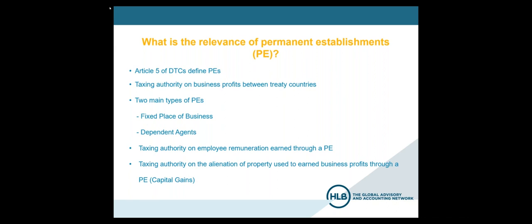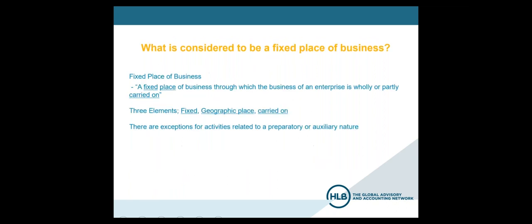The next question is: what is considered to be a fixed place of business? Most double tax conventions define it as a fixed place of business through which the business of an enterprise is wholly or partly carried on. When you look at that phrase there are three elements: it's got to be fixed, so there has to be a degree of permanence; it's referring to a place, so there has to be a geographic location where you can identify a business being carried on; and third, the business actually has to be carried on through that place — it's not enough to just have a location.